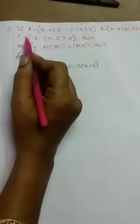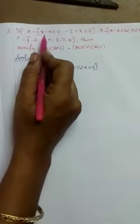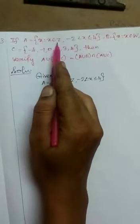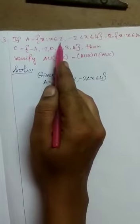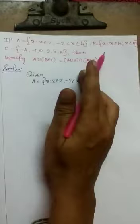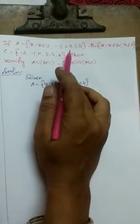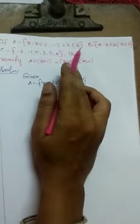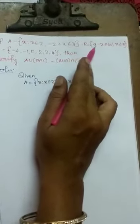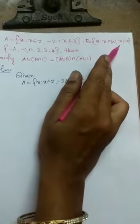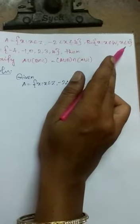The third question. If A is equal to the set of x such that x belongs to Z, meaning integers, with the limit minus 2 less than x less than or equal to 4. And B is equal to x such that x belongs to W, where W means whole numbers, and x less than or equal to 5.